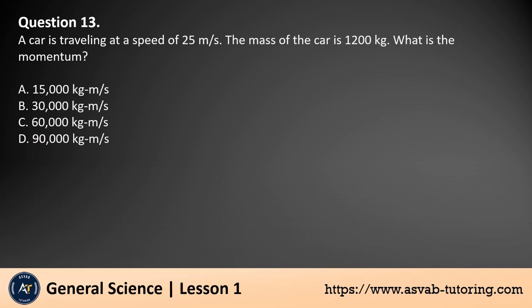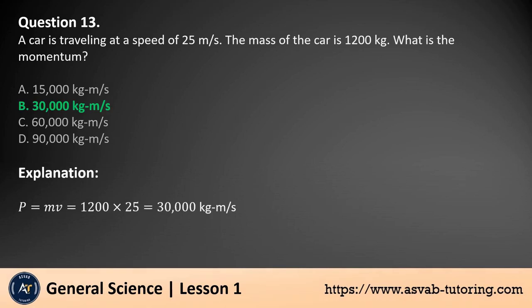Question 13. A car is traveling at a speed of 25 meters per second. The mass of the car is 1,200 kilograms. What is the momentum? a. 15,000 kg meter per second. b. 30,000 kg meter per second. c. 60,000 kg meter per second. d. 90,000 kg meter per second. The answer is b. The momentum is equal to the mass times the velocity. The momentum is 30,000 kg meter per second.